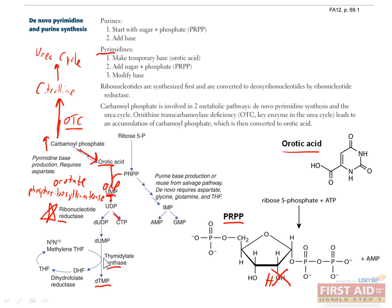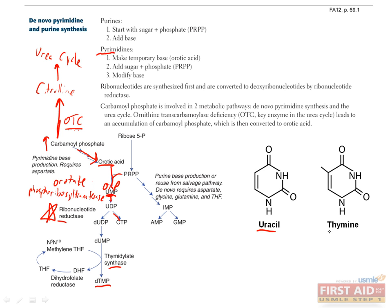This last step, catalyzed by thymidylate synthase, is especially important for a lot of reasons, including nutrition and pharmacology. As you can see from these structures of uracil and thymine, the only difference between them is this methyl group. A common molecular mechanism for adding methyl groups to molecules uses the coenzyme tetrahydrofolate, which in this case sends the methyl group to uracil to create thymine. After donating this methyl group, tetrahydrofolate becomes dihydrofolate, which requires the enzyme dihydrofolate reductase to cycle back to tetrahydrofolate.